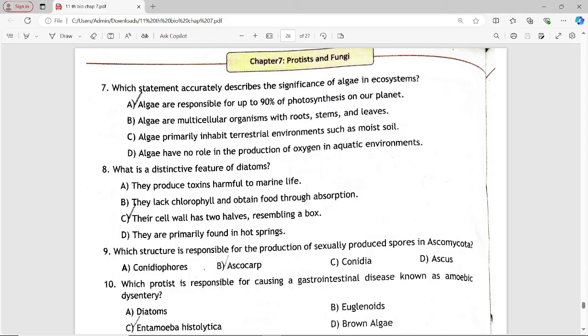Next MCQ: Which structure is responsible for production of sexually produced spores in Ascomycota? Options are: conidiophores, ascocarp, conidia, ascus. Answer is option B: ascocarp.